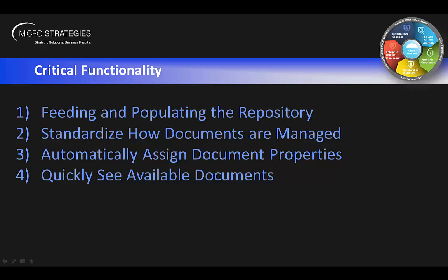Third, automatically assign document properties. Every user wants document properties for searching and finding their documents, but nobody wants to manually attach them, so that has to be seamless. Fourth, quickly see available documents. This is the most critical piece — making it as easy as possible for users to access and see what documents are available for a deal, quickly and easily.